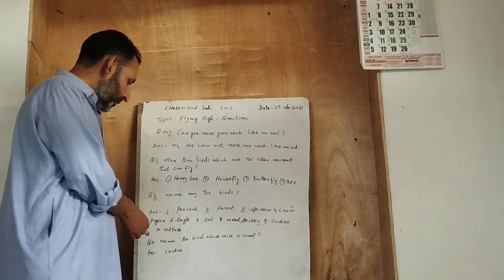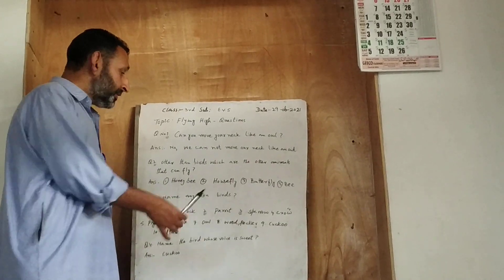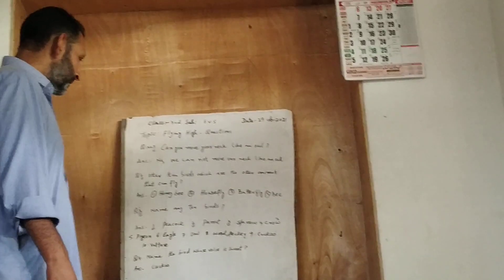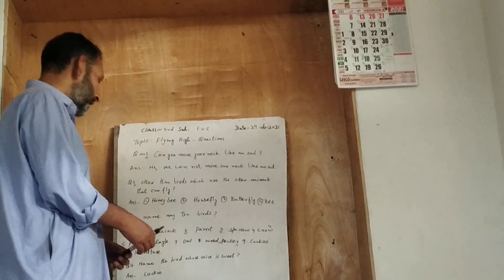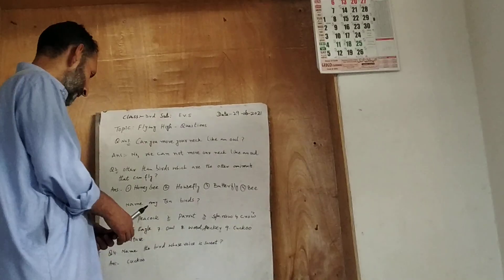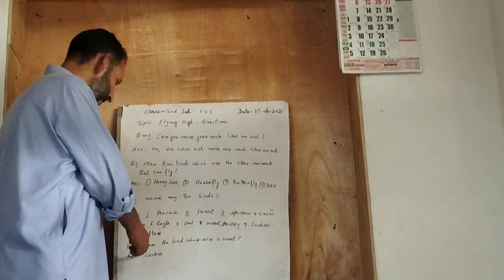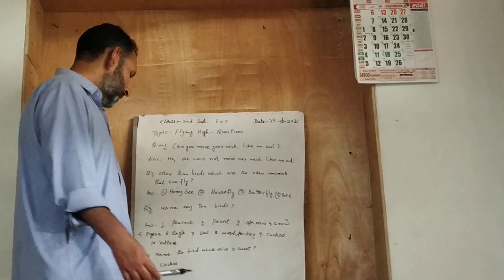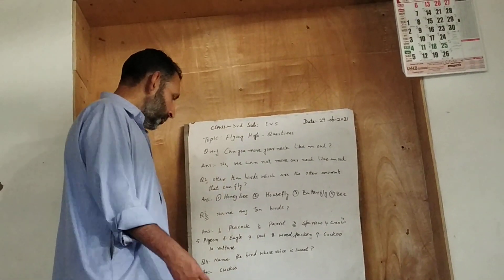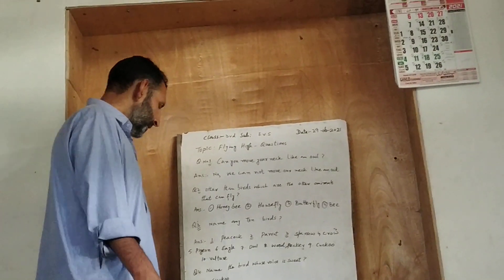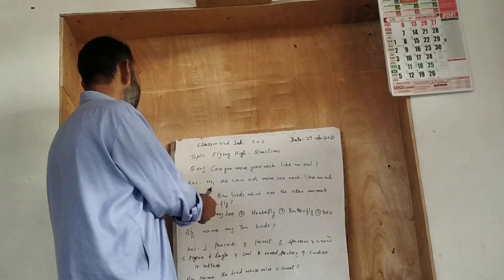Question number four. Name the bird whose voice is sweet. Tsukus bird. Tsukus parindu ki naam dikhne hai. Awa shisaan badmadar. It's karna shisa awaar. Cuckoo. Tsukus bird gai, cuckoo. It's karna cuckoo. Chati. It's karna shisaan.